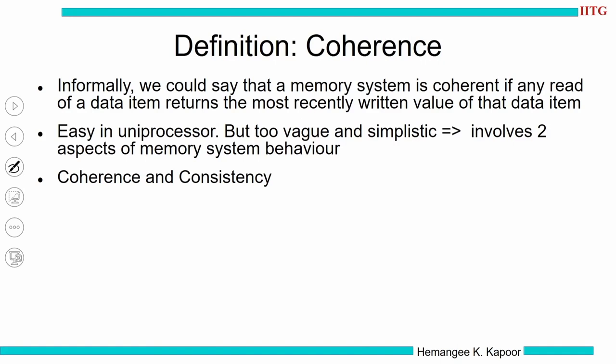This becomes slightly more complicated when we go to a multiprocessor setup. This concept is very easy in a uniprocessor, but when we go to multiple processors, we need to understand how the memory system behaves and how values are transferred from one to the other. To formalize this, we are going to divide this task into two aspects — one is called coherence and the other is called consistency.